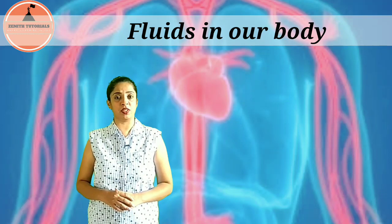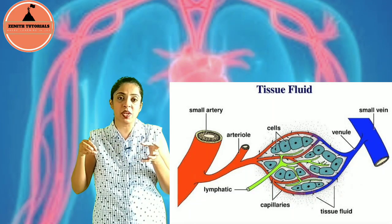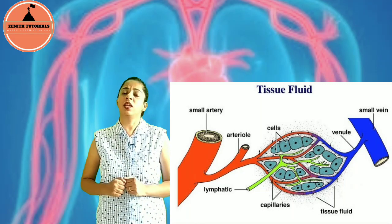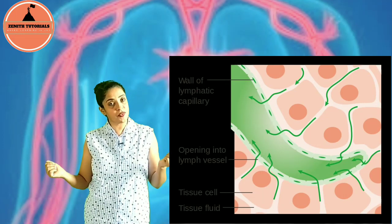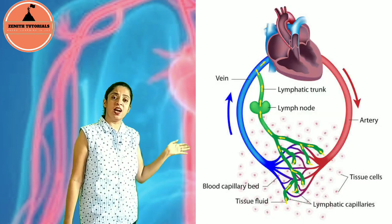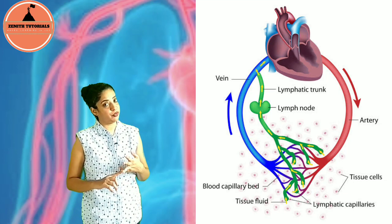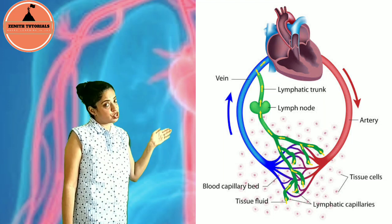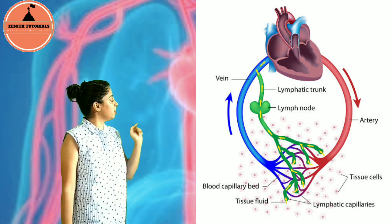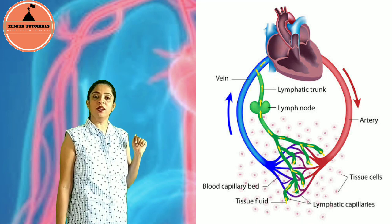Tissue fluid is present between the spaces of the cells — so in any organ, between the cells there are spaces, and the fluid in those spaces is tissue fluid. Lymph is contained within the lymph vessels and the lymphatic organs such as the spleen and tonsils. In the diagram, oxygenated blood is shown in red, deoxygenated blood in blue, lymph in green, and the fluid between the cells is tissue fluid.